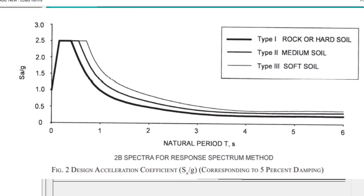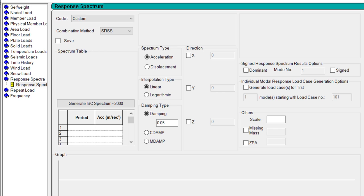If the data entered in the custom period versus acceleration option is normalized data, that means if it has been already divided by the factor g or any other factor, then you need to define the same value of that factor in the scale factor option. But if the values are not normalized, then there is no need to specify any value, just give it the default value as one.